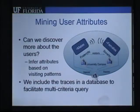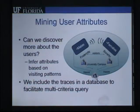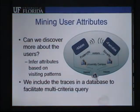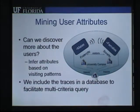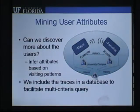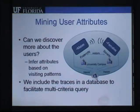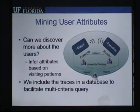Even though the trace is processed and users are represented by an anonymized version of the MAC ID, we try to discover more user attributes based on the available information from the trace. One idea we pursued is to find out the gender of wireless LAN users from their most frequently visited locations. Since there are fraternity and sorority houses on the university campuses, we use statistical techniques to filter out visitors from the residents of these buildings. This is an example of how one can infer user attributes from visiting patterns. We include users' traces in a database to facilitate multi-criteria queries in the future.